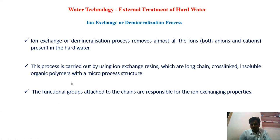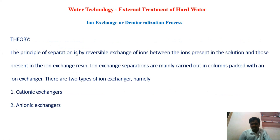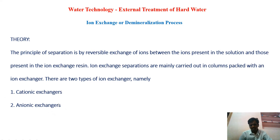The functional groups attached with this linear polymer chain are responsible for the ion exchange property. The principle of separation is exchange of ions between resin and water — that means ions present in the resin are exchanged with ions present in the water. If the resin is used to exchange positively charged cation ions, that is called a cation exchange resin. If the resin is used to exchange negatively charged ions with water, that is called an anion exchange resin.